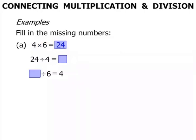Now from that, 24 divided by 4 will equal 6. The next one: some number divided by 6 equals 4. Well there's a connection between the other two. That number will be 24. 24 divided by 6 equals 4.